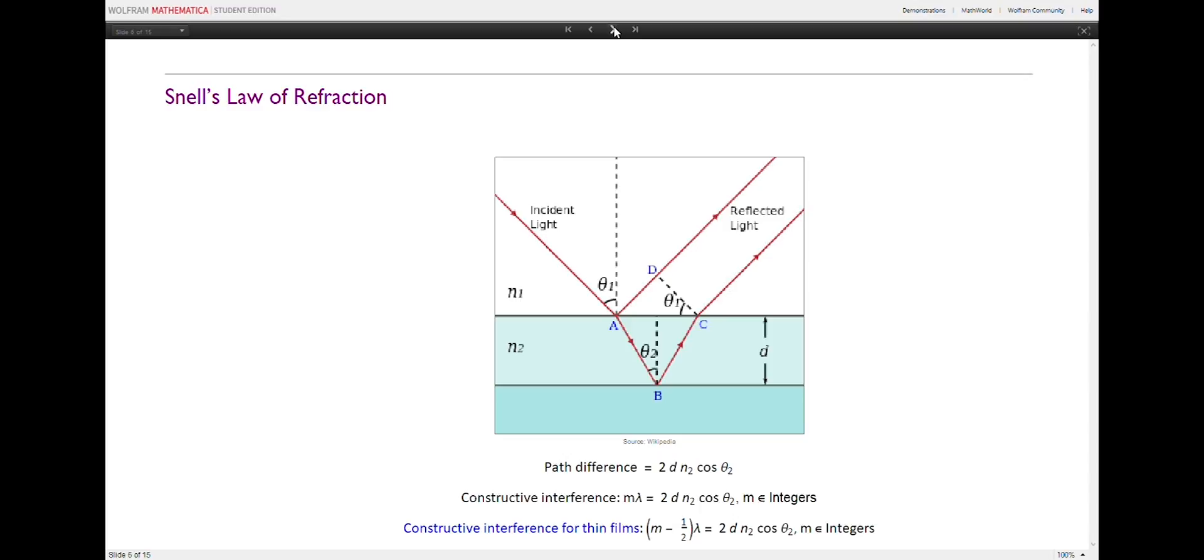Now, using Snell's law to substitute for n1, the path difference between the two reflected waves can be expressed in terms of the thin film medium only, only depending on n2 and theta2. That means for constructive interference between the two waves, the phase shift has to be 0, and the path difference has to be an integer multiple of the incident light's wavelength, lambda.